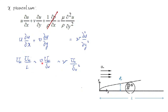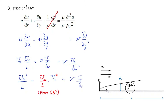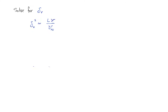Substituting the result from continuity for v, both left-hand-side terms scale as u∞²/L, and the right-hand side is ν × u∞/δᵥ². Now I can 'solve' this squiggle equation for δᵥ. Setting u∞²/L ~ ν × u∞/δᵥ² and solving: δᵥ² ~ L·ν/u∞, so δᵥ ~ L × (ν/u∞)^(1/2). That's equation 4.